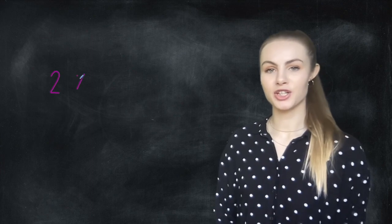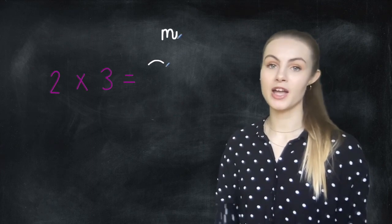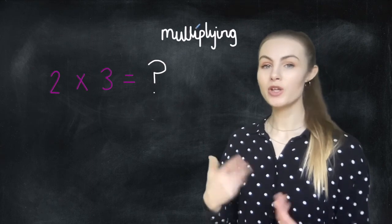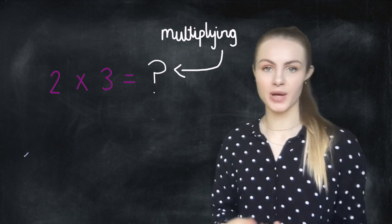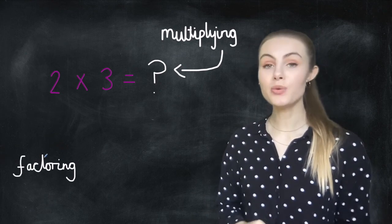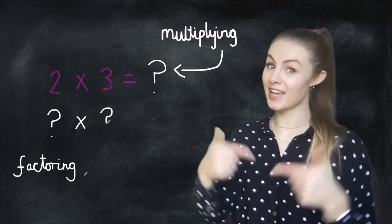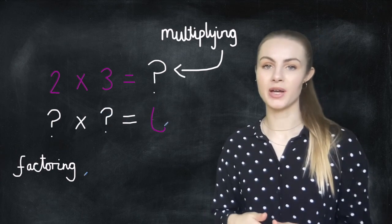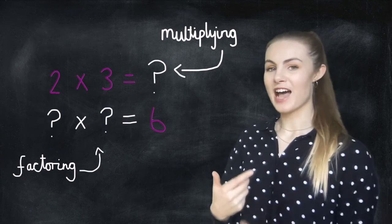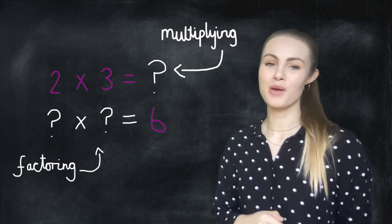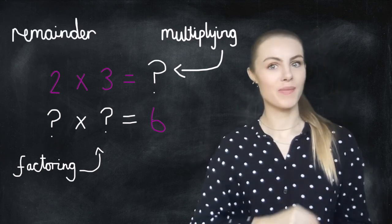When you do multiplication, you're given two numbers to multiply and you have to find the answer. When you're factoring a number or finding the factors of a number, you're given one number and you have to find the numbers that multiply together to give you your original number. I like to think of it as will that number go into your original number and how many times and without a remainder.